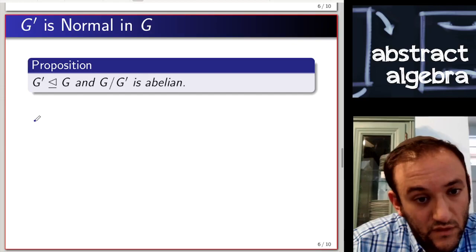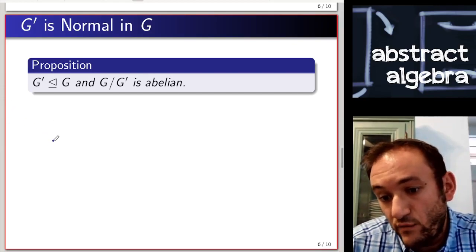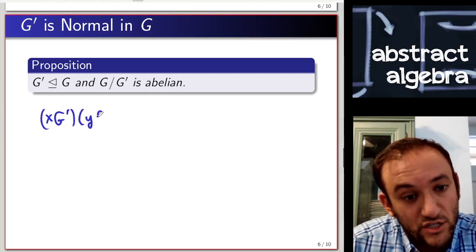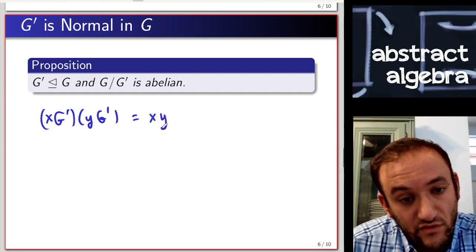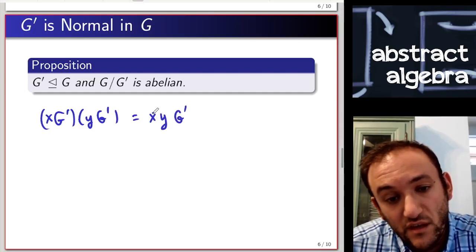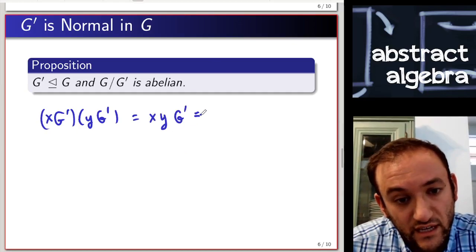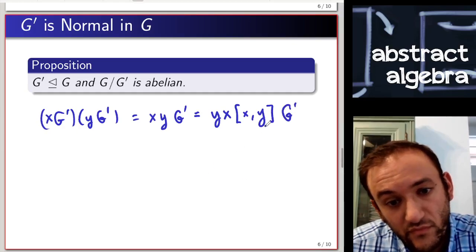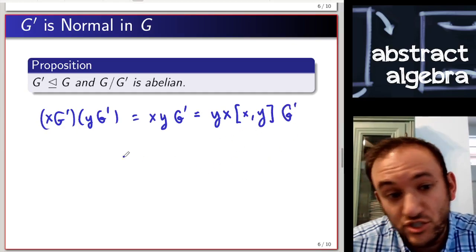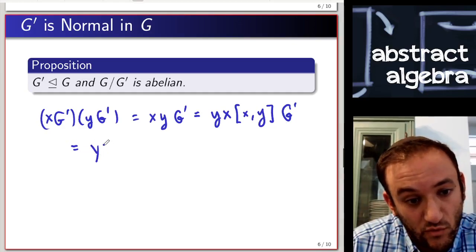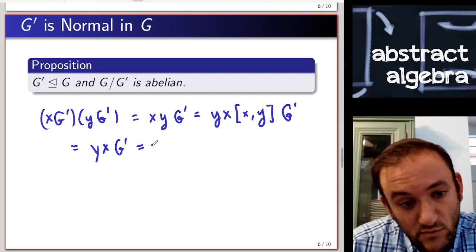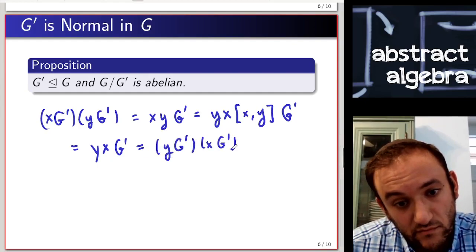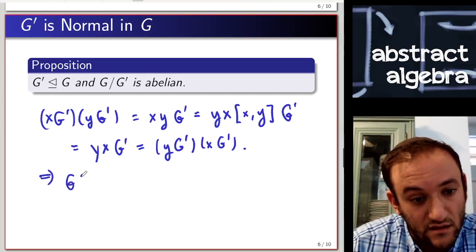As for the next claim, that G mod G prime is abelian: consider what the operation on cosets looks like. If we have xG prime times yG prime, by definition of quotient groups this equals xy times G prime. From our first property of commutators, xy equals yx times [x, y] times G prime. Since [x, y] is a commutator, we can absorb it into G prime, so this is equal to yx G prime — which is what you'd get multiplying the cosets in the other order. So the quotient group is abelian.